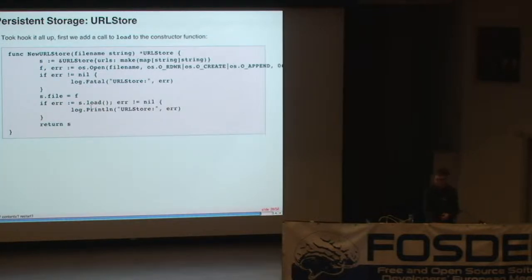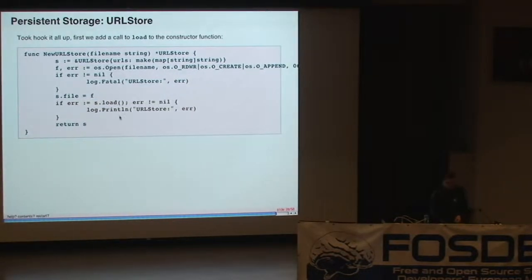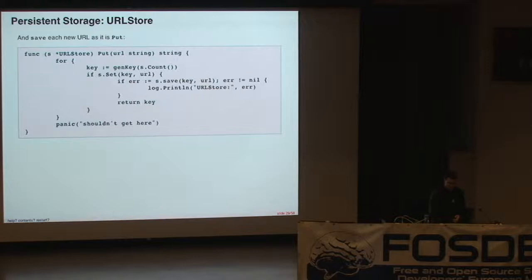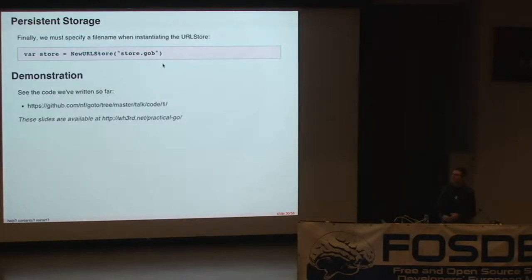The last thing we need to do is stick a call to s.load into our initializer function. If that fails, we print a benign error because the first time we run this program, our store won't exist — so it's okay for this to fail on the first run. And finally, we need to add a call to save each time somebody successfully makes a put. In our put function, before returning the key, we call s.save passing in the key and URL. If there's an error with that, we log it. And when we instantiate our store at the top level of our program, we need to provide a file name where the data will be written and read from.